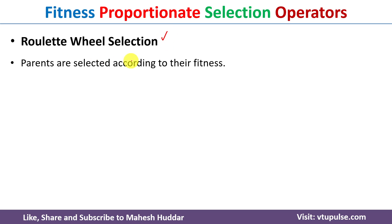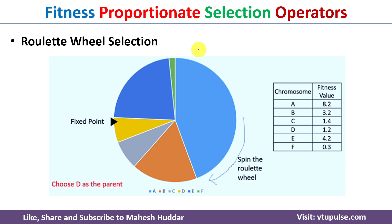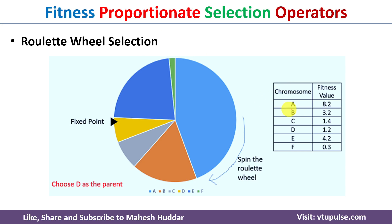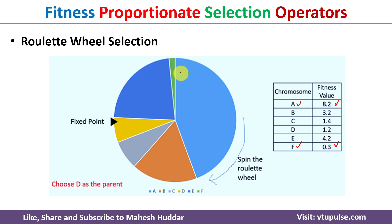The first fitness-based technique is the roulette wheel selection technique. Parents are selected according to their fitness — chromosomes with better fitness have more chances of getting selected. For example, I have considered six chromosomes with their fitness values. Each chromosome is represented as a slice on the roulette wheel. Chromosome A has the highest fitness value so its slice is the largest, while chromosome F has the smallest fitness value so its slice is the smallest.